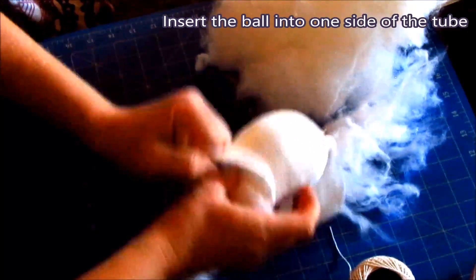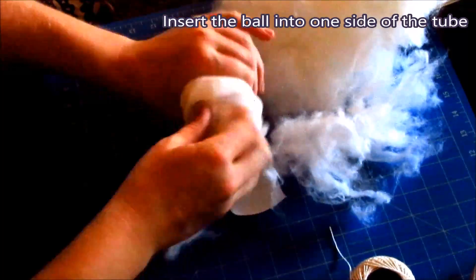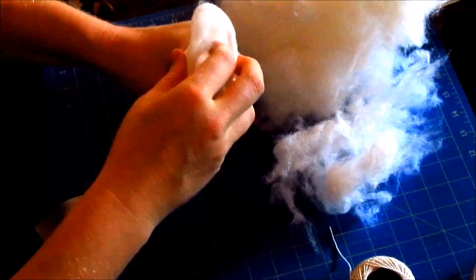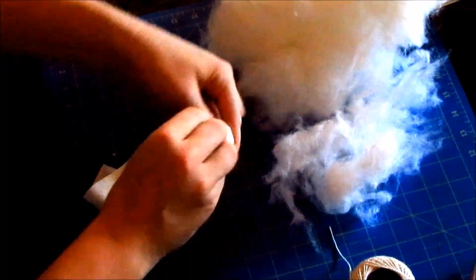Insert the ball into one side of the tube, stuff it in there real nice, make sure you have a good neck, add or take away some of the corn stuffing if necessary and tie a knot.